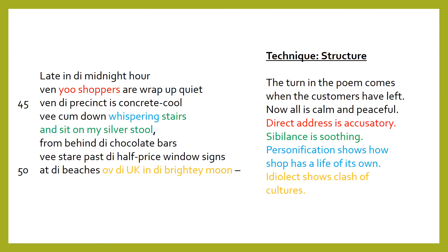Now there is the turn or the change in the poem. We have the direct address in red which is accusatory, the S sounds — the sibilance in green — which is soothing, the personification shows how the shop has a life of its own, and the idiolect shows a clash of cultures, the idiolect being the speaker's own distinct voice.